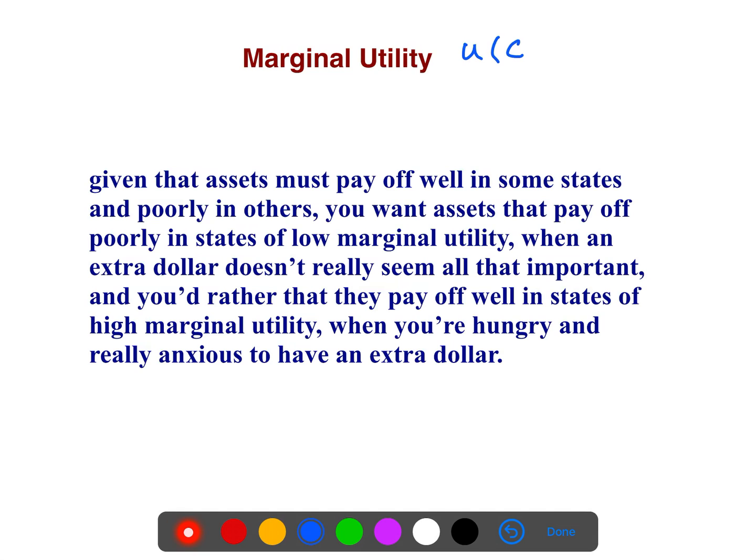The marginal utility - utility could be written in terms of consumption, which means income minus investment. You either do investment or consumption if you have a total income of a finite amount. Given that an asset must pay off well in some states and poorly in others, you want assets that pay off poorly in states of low marginal utility, when an extra dollar doesn't really seem at all important, and you would rather that they pay off well in states of high marginal utility, when you are hungry and really anxious to have an extra dollar.